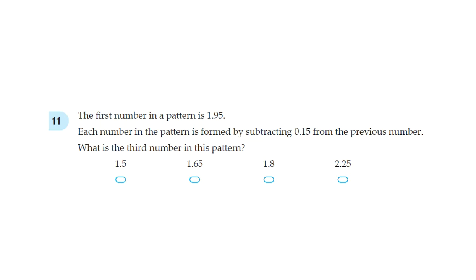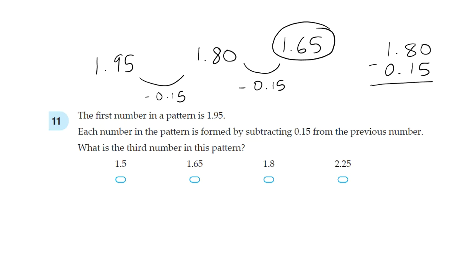Okay, so the first number is 1.95 and you take away 0.15. This will give you 1.80, and then take away another 0.15 and you should get 1.65. You can also do it like this. It's relatively straightforward so there should be no problems with that.